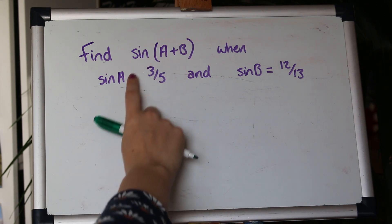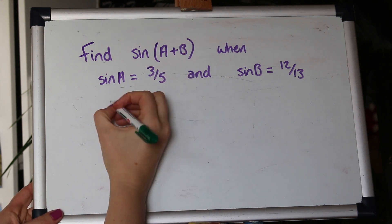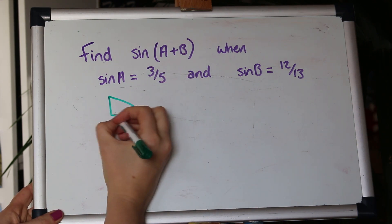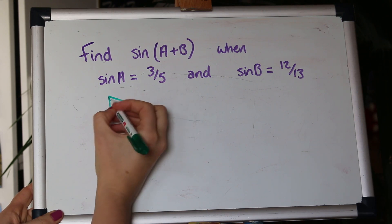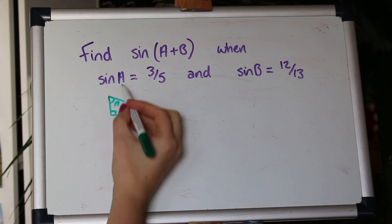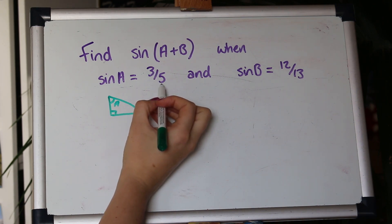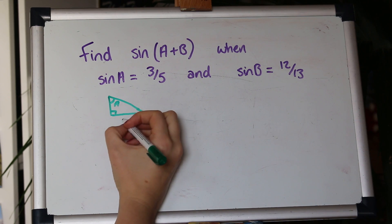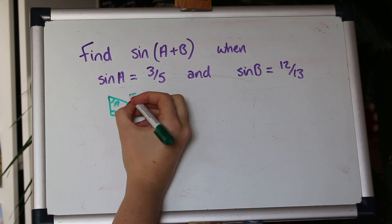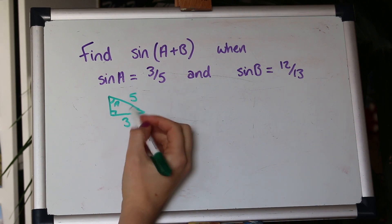So let's use triangles to find cos of these things. I'm going to draw a little right angle triangle and label this angle here a. So sine is 3 over 5th and remember sine is opposite over hypotenuse so I'm going to label that opposite over hypotenuse we know 3 over 5.